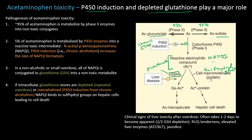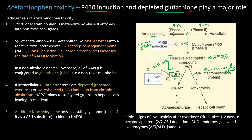By knowing this, we can provide an antidote in the setting of a large or repeated overdose. If we give N-acetylcysteine, it acts as a sulfhydryl group donor — it binds to NAPQI so that it doesn't bind to hepatic proteins, forming a non-toxic metabolite that can be excreted. The reason we can't just give GSH directly is because it cannot get into cells very well.